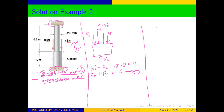With the compatibility method, we are going to divide the structure into two sections at the point where the external force is applied. We can see that the external force is applied at B, so we divide the whole structure at B into two sections and draw the free body diagram for AB and also for BC.